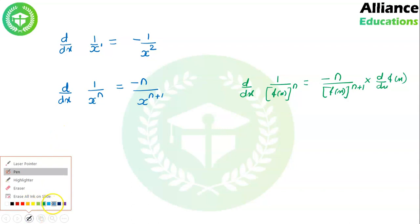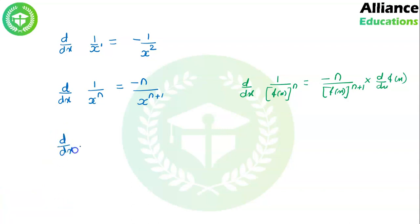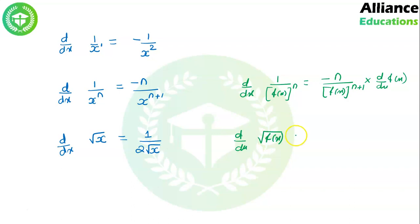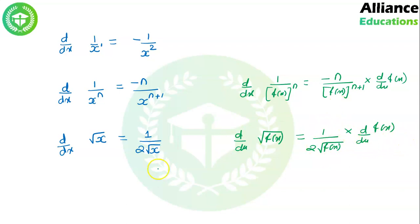Then d/dx of √x — the derivative of √x is 1/(2√x). So d/dx of √f(x) will be 1/(2√f(x)) multiplied by d/dx of f(x). We take the derivative of the root first, then go inside the root — f(x) was inside — so we take the derivative of f(x), and keep multiplying derivatives until a single x remains.